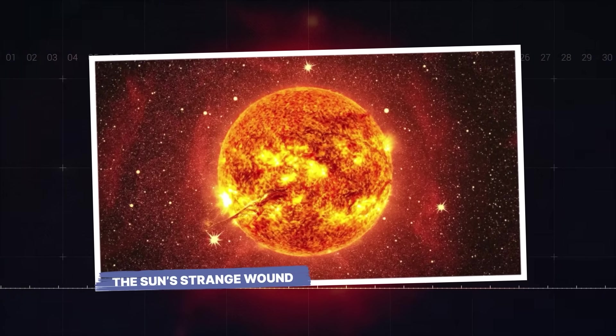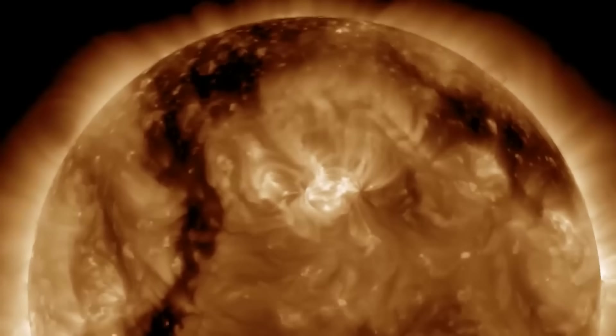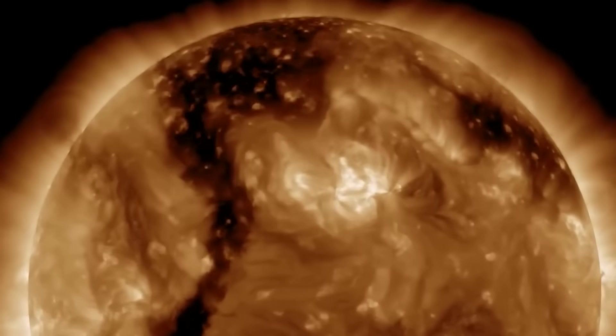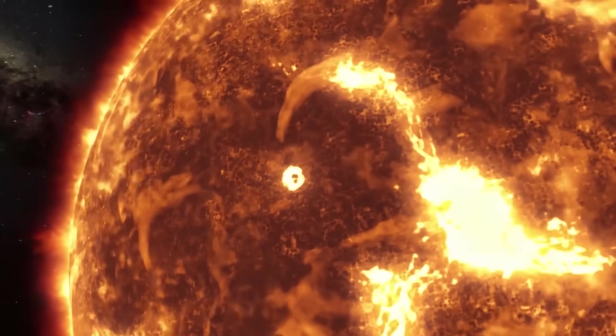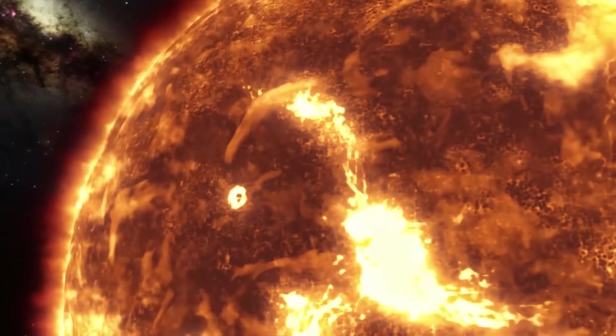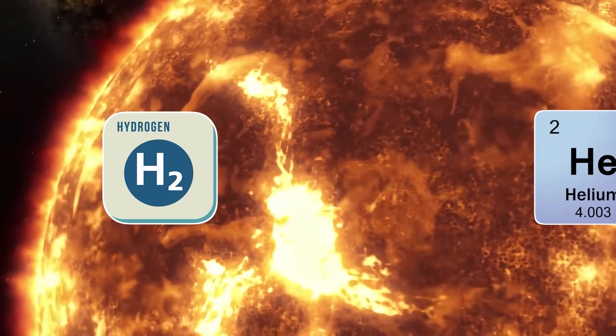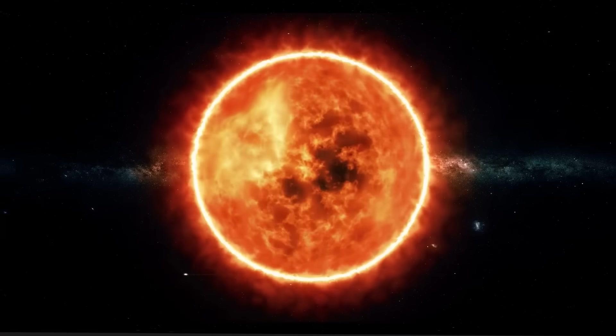The Sun's strange wound. When we talk about a giant hole appearing in the Sun, it's not like a hole in a piece of Swiss cheese. The Sun is a massive sphere of superheated gas, primarily hydrogen and helium, undergoing continuous nuclear fusion.